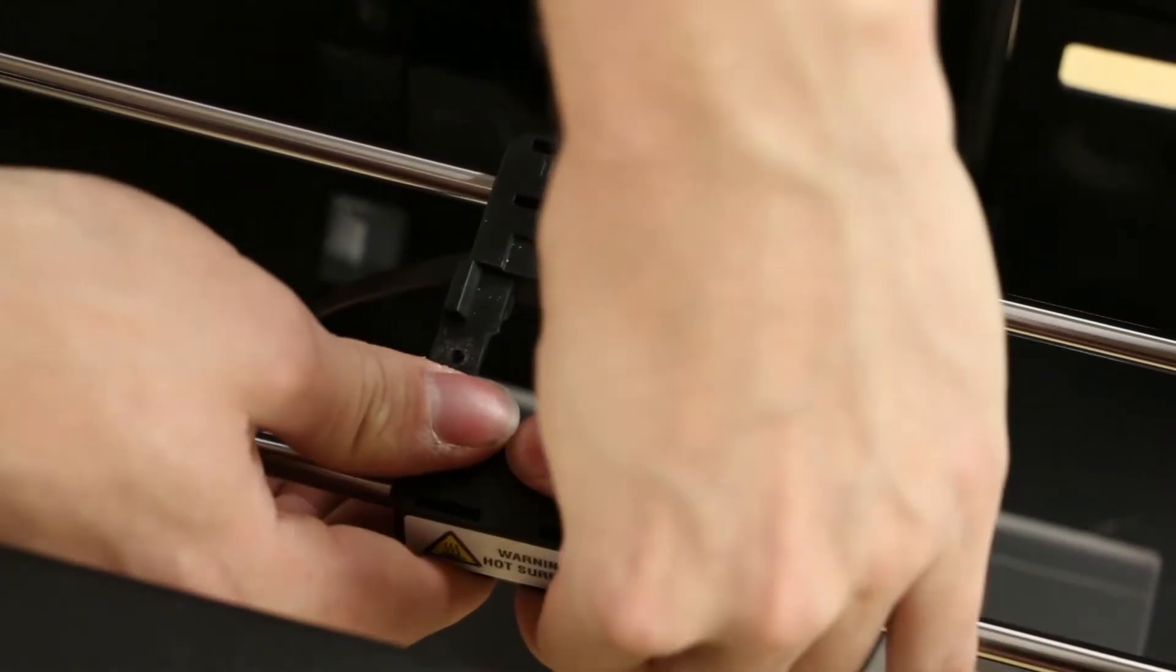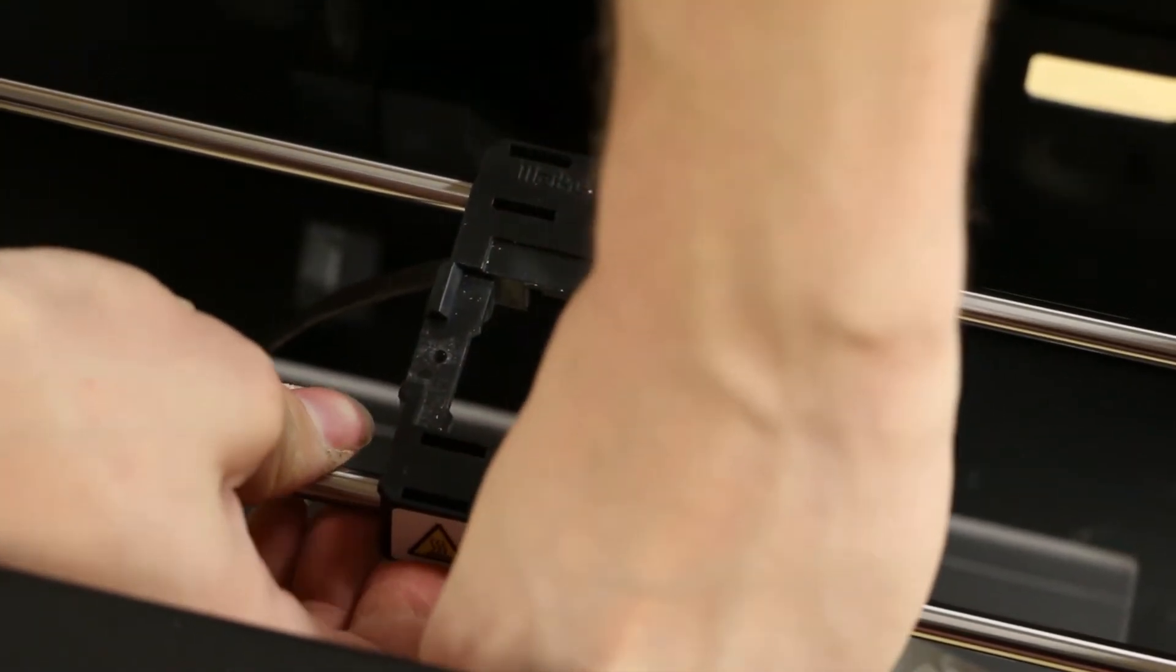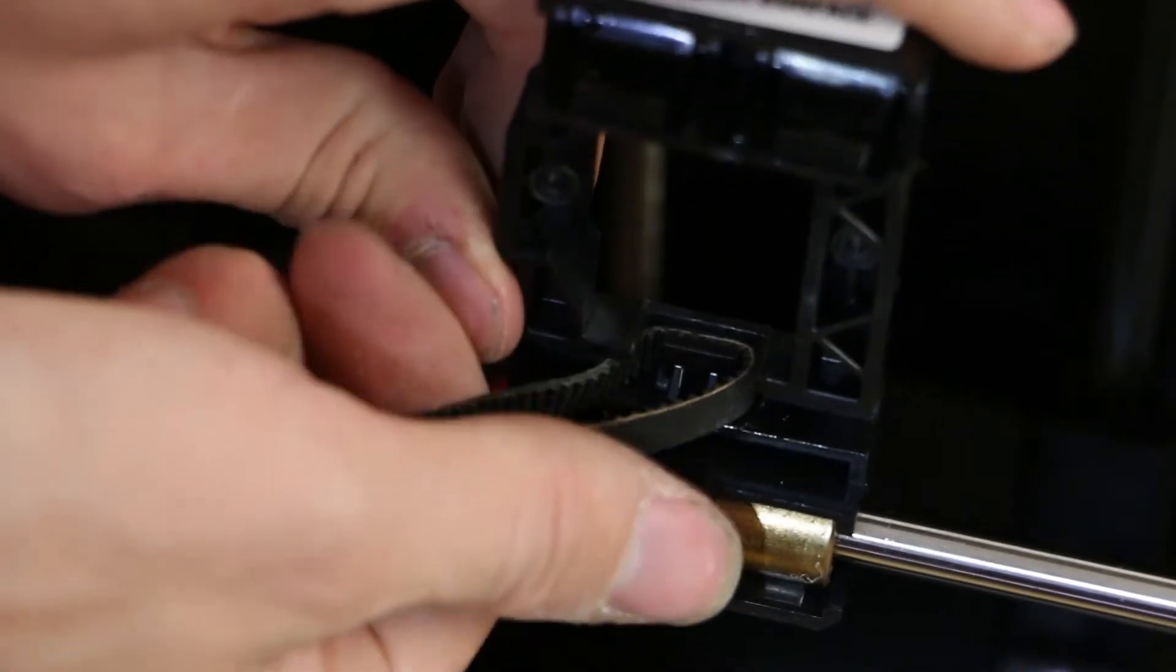Removing the carriage will be next. Grasp the front edge of the carriage with your fingers and pull up. You'll hear a firm click. Swing the carriage up as shown.